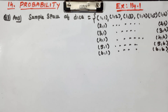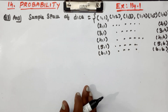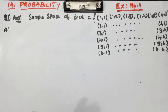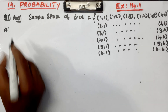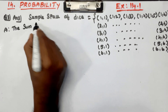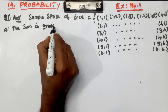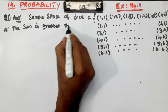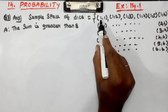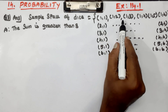This is the sample space of your dice. Now, what is Event A? The sum is greater than 8. We are looking for all outcomes where the sum of the two dice is greater than 8.